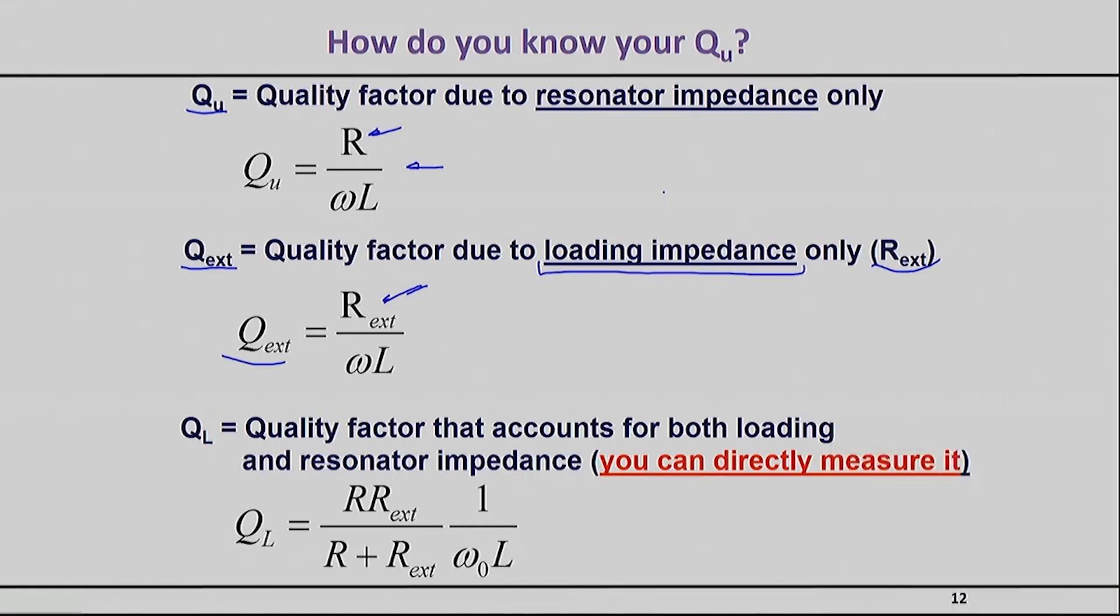Finally, you have what we call the loaded quality factor, which is the quality factor you get when you measure this in real life. In real life, the losses come both due to the resonator itself as well as to the loading resistance, so the loaded quality factor is actually given by this equation. That's the quality factor you can directly measure—the quality factor that is measured by taking the central frequency and dividing it by the bandwidth as we discussed in the very beginning.